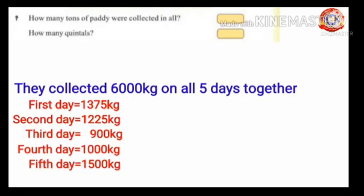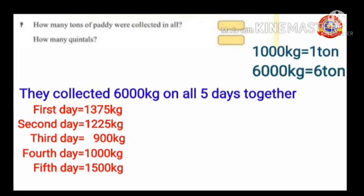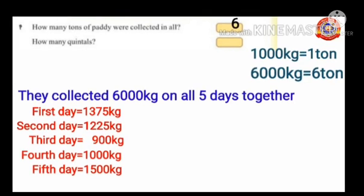Next question: how many tons of paddy were collected in all? They collected 6000 kilograms on all five days together. We know that 1000 kilograms make one ton, so 6000 kilograms make 6 tons. Also mention how many quintals: one ton equals 10 quintals, so 6 tons equals 60 quintals.